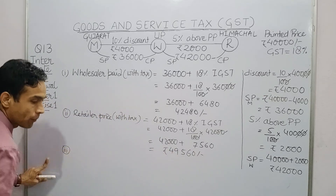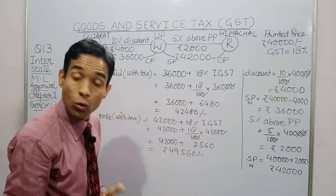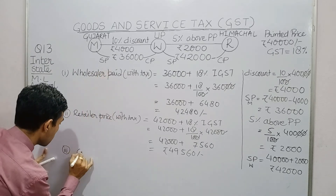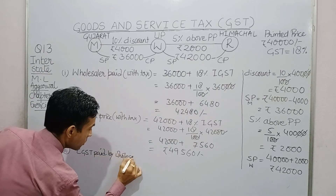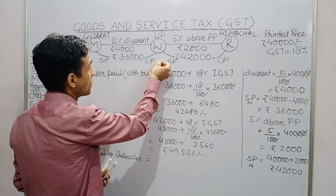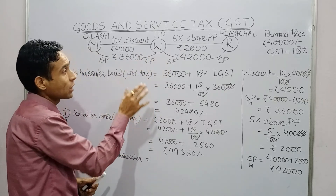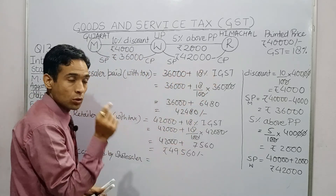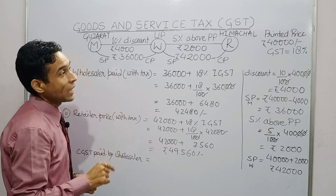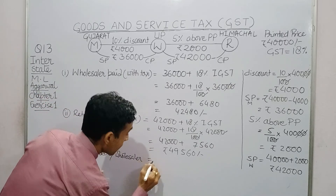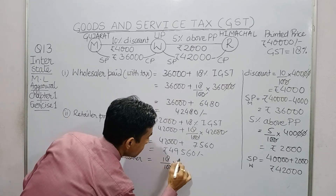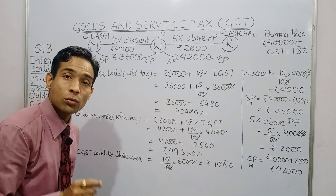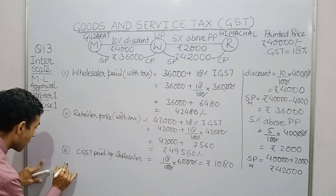In the third part, we have to find the amount of tax paid by the wholesaler to the central government. For the wholesaler who is in the middle, the purchase price is ₹36,000 and the selling price is ₹42,000, giving a profit of ₹6,000. Applying 18 percent total IGST on ₹6,000 — because it is an interstate transaction — the tax paid by the wholesaler to the central government is ₹1,080.